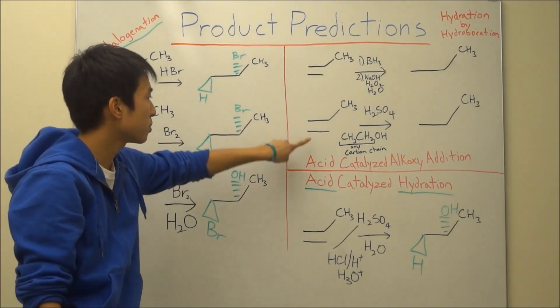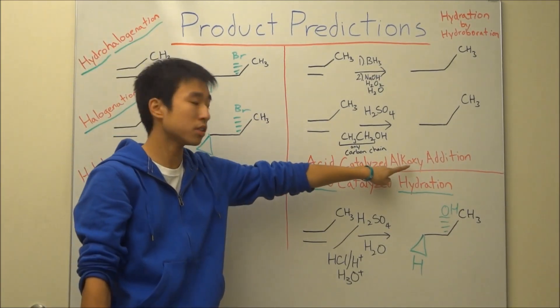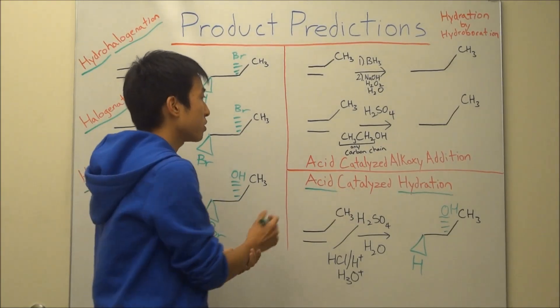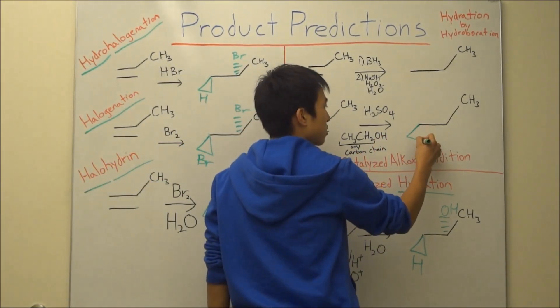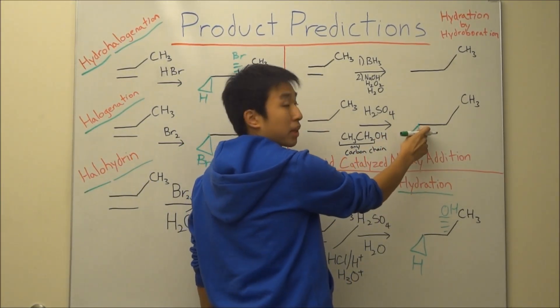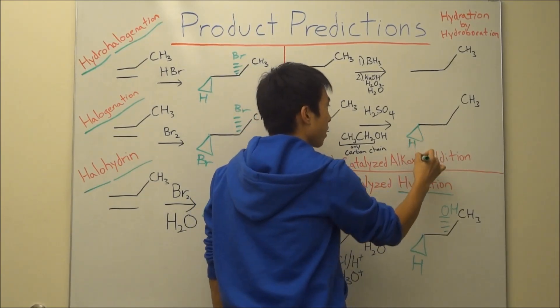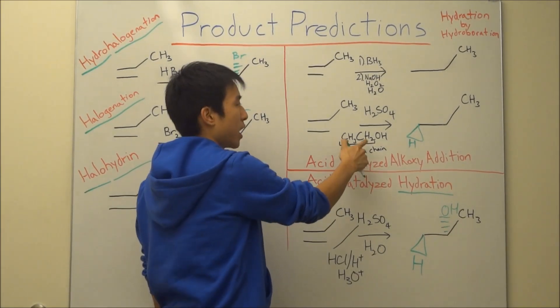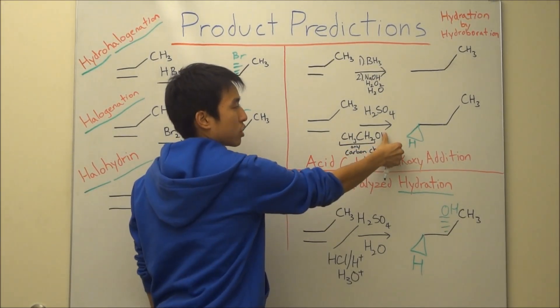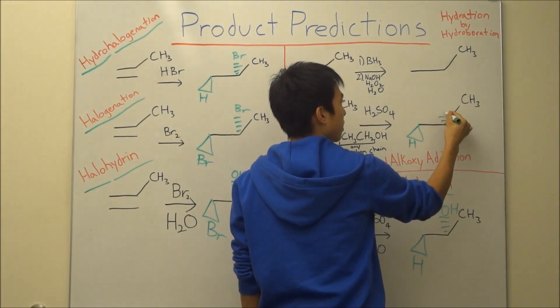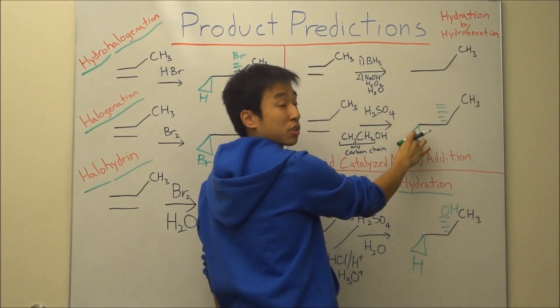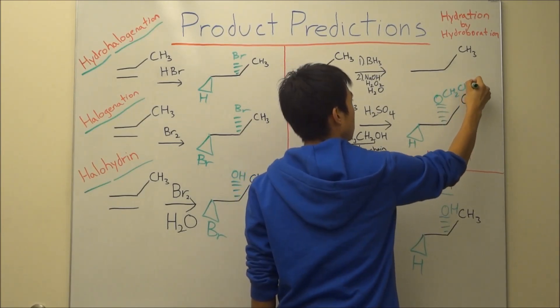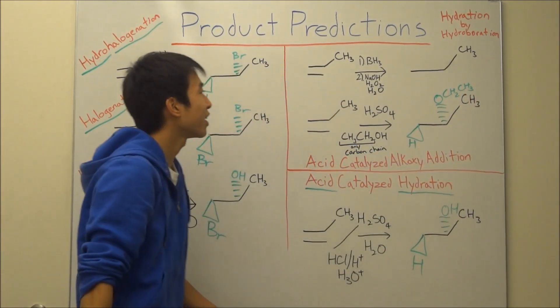Now, if you look at this one up here, acid catalyzed alkoxy addition, it works a lot like acid catalyzed hydration. You also first add on your hydrogen to the less substituted group, so the one with less carbons. And then you basically add on everything here minus the H. And then once again, it's going to be opposite wherever H is facing. So it's going to be OCH2CH3.